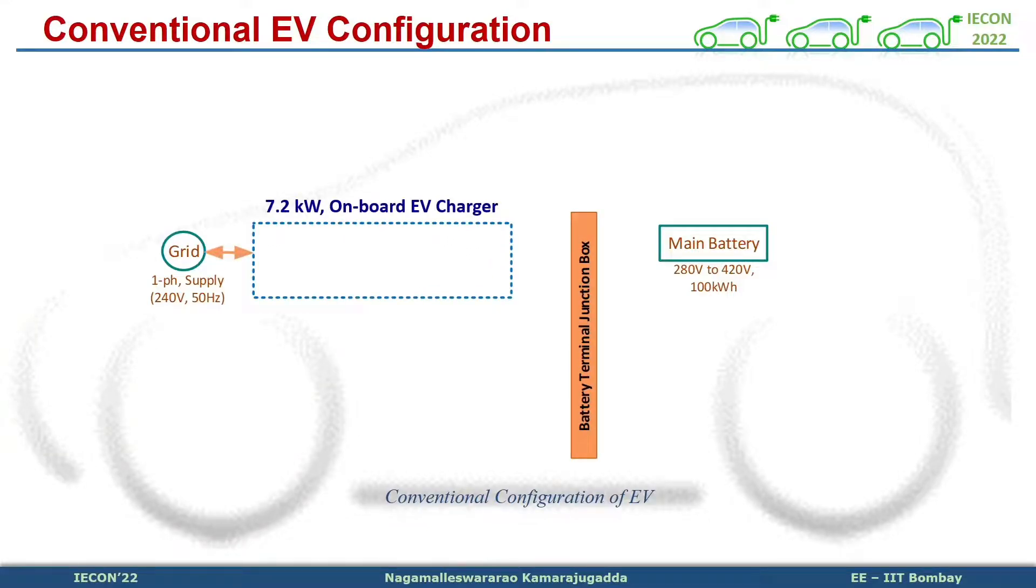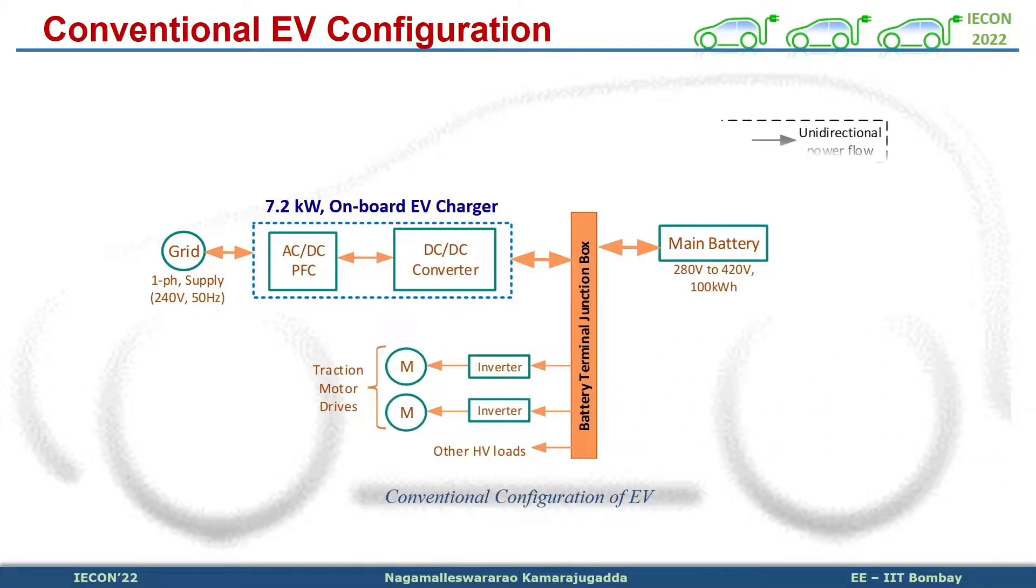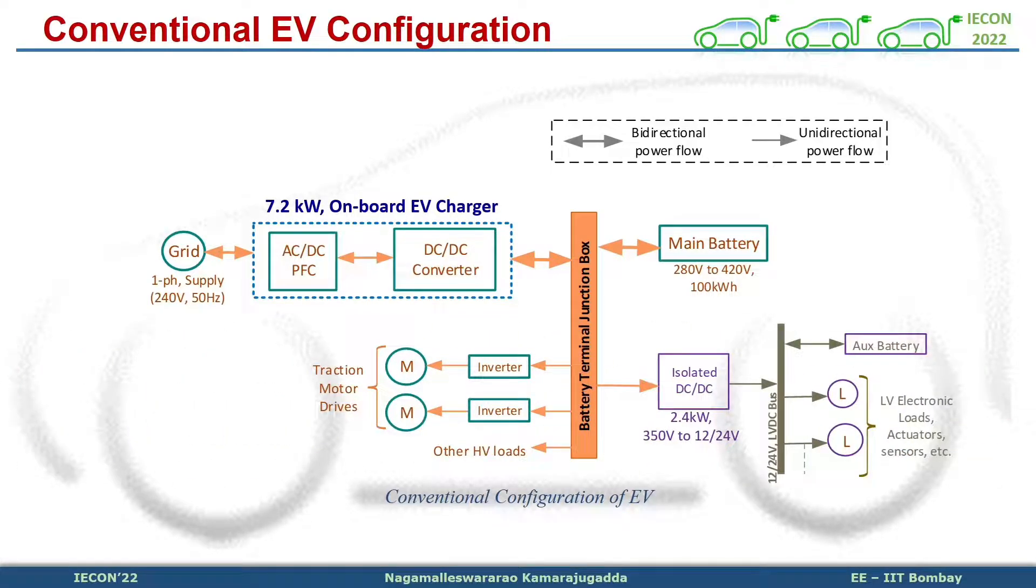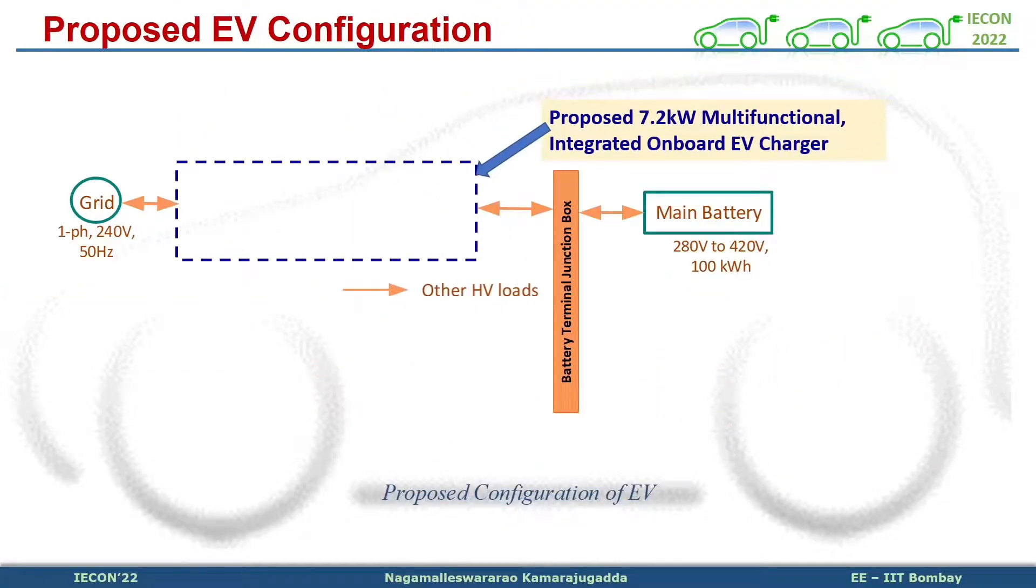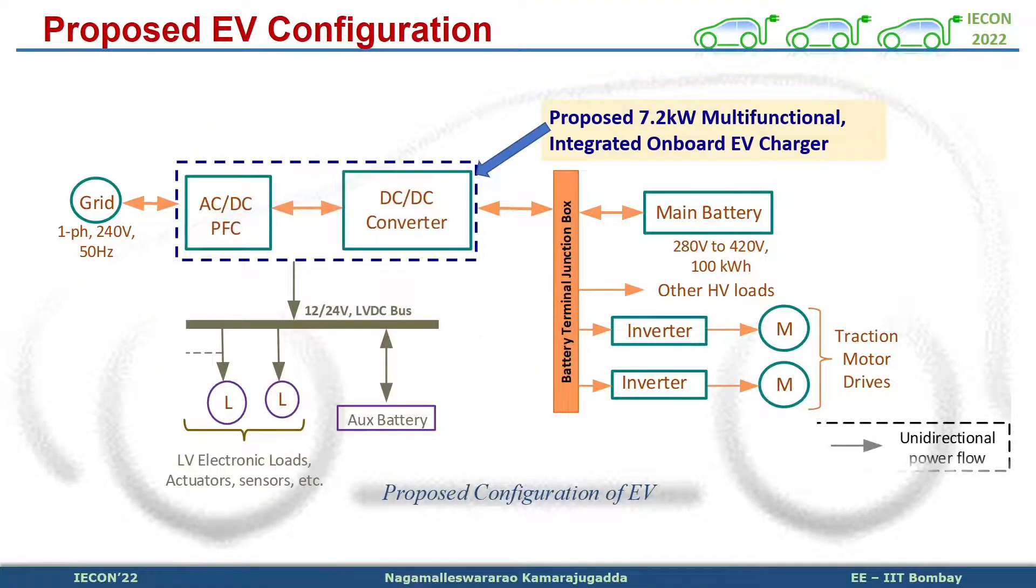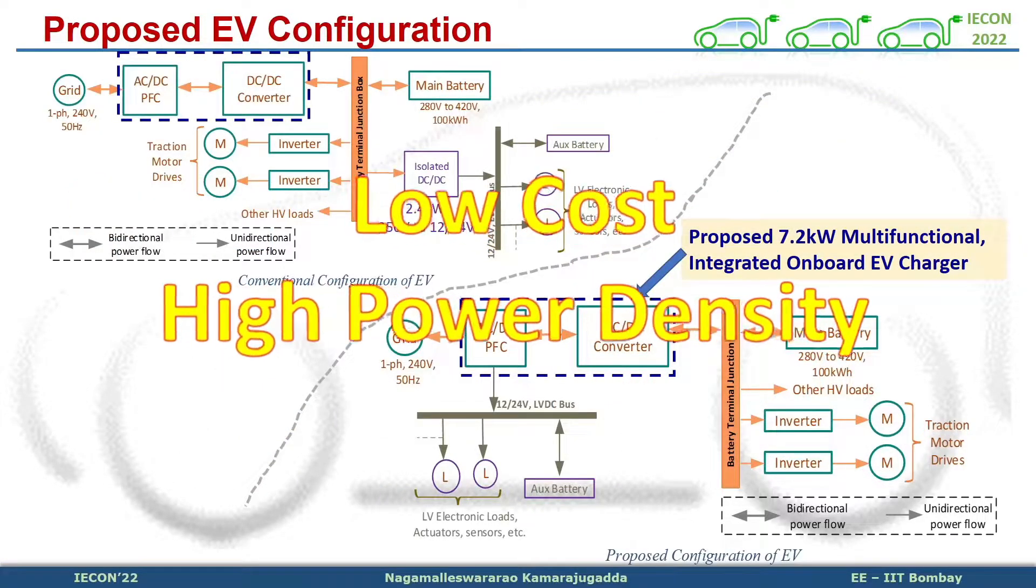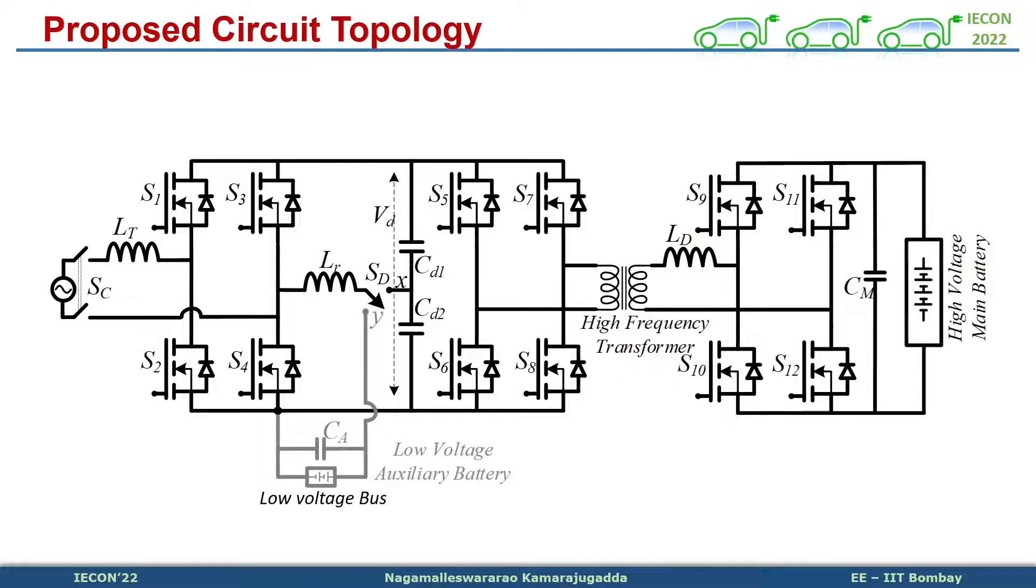The conventional EV configuration contains onboard charger to perform G2V and V2G operations. Also, a low-power isolated DC-DC converter to power up the low-voltage bus. We propose to perform these operations using single charger circuit, thus reducing the cost and improving power density.